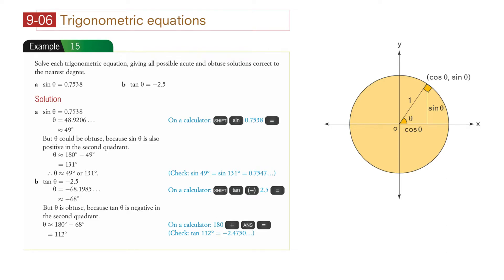Chapter 9, section 9-06, Trigonometric Equations. Example 15: Solve each trigonometric equation, giving all possible acute and obtuse solutions correct to the nearest degree. Part A: sine theta equals 0.7538.